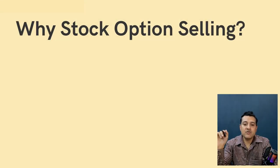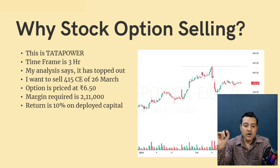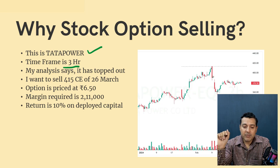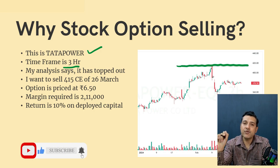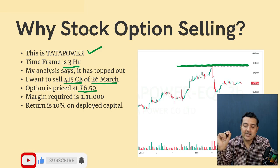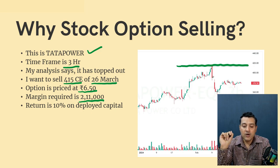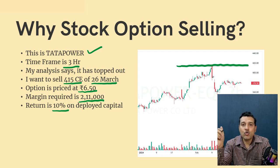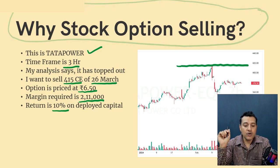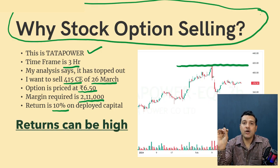The first question that pops into your mind is: why stock options selling? Let's take the example of Tata Power. The timeframe here is 3-hour and my analysis says that this particular stock has topped out. I want to sell a 415 call of 26th March. This option is priced at Rs. 6.50 and the margin required is Rs. 2,11,000 — that is roughly Rs. 23,000 return, which is 10% on deployed capital. The returns are very high if done right.